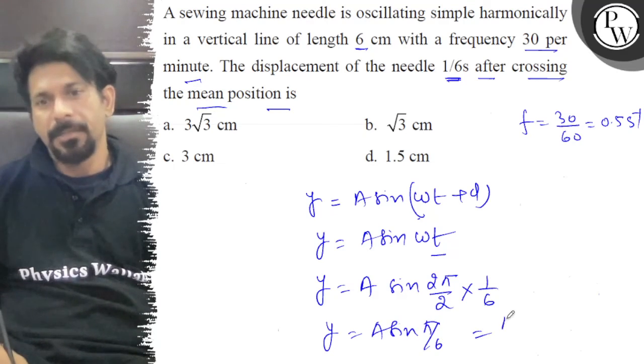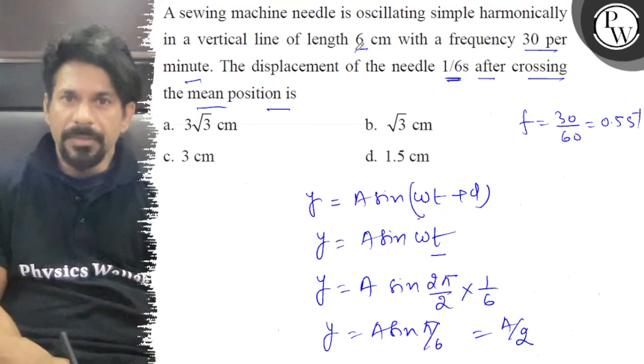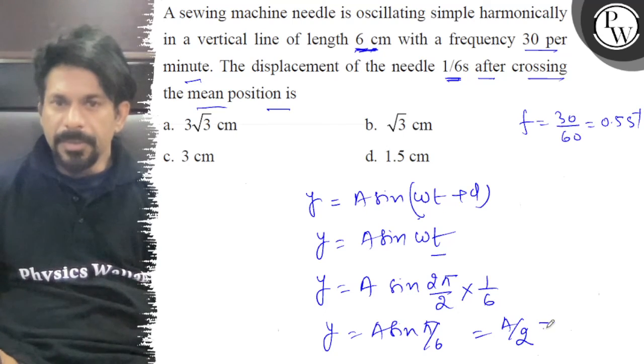That means a by 2. And the vertical line is 6 cm. So, amplitude is 3, therefore 3 by 2 is equal to 1.5 cm.